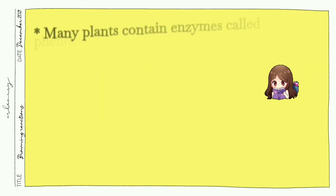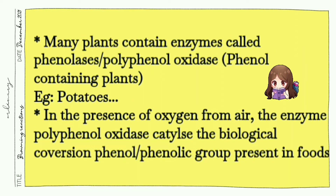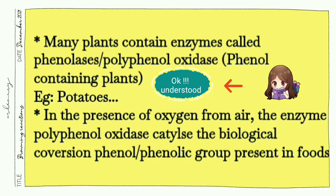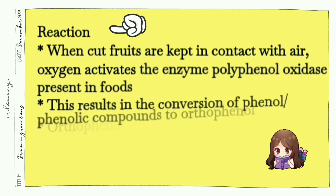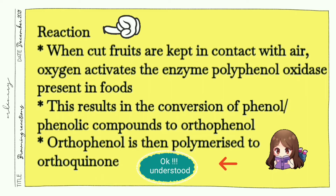Many plants contain an enzyme called phenylases or polyphenol oxidase. Plants containing phenol or phenolic substances — potato is a common example. When this food product comes into contact with oxygen, the polyphenol oxidase gets activated, resulting in the biological conversion of the phenolic compounds present in the food product. That is, when cut fruits are kept in contact with air, the enzyme polyphenol oxidase gets activated.